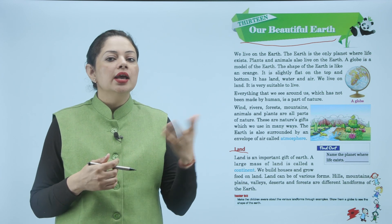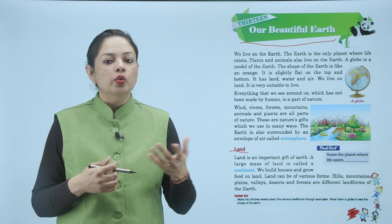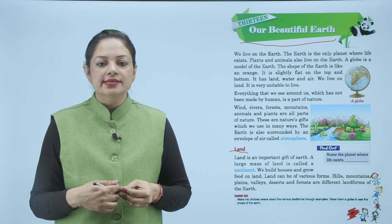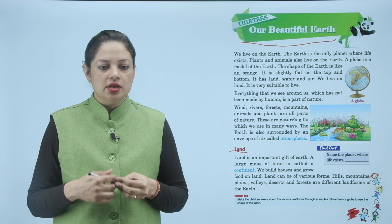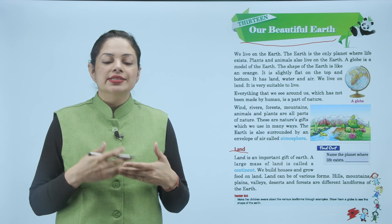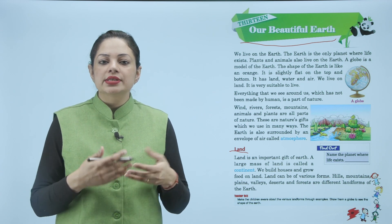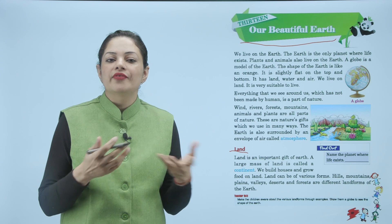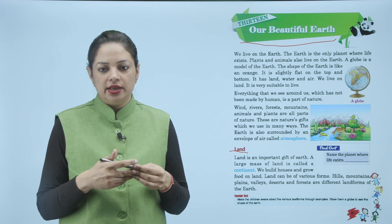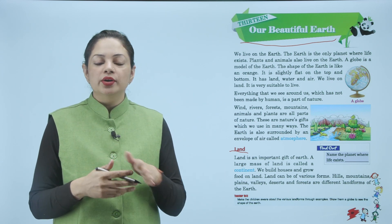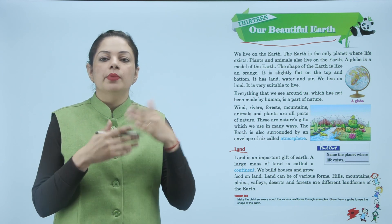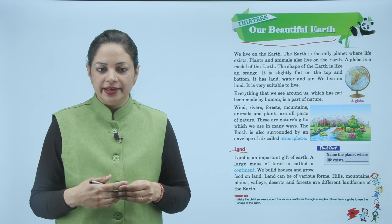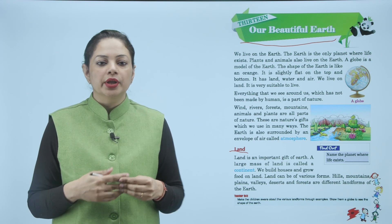Land can be of various forms — जैसे कि hills, mountains, plains, valleys, desert and forest। अलग-अलग type की land मिलती है जैसे forest land, desert land जहाँ रेत ही रेत होता है, valleys होती हैं, plain होता है, या फिर mountain या hill land होती है।